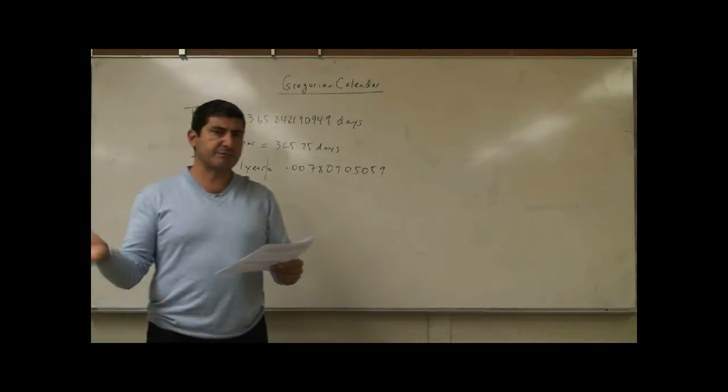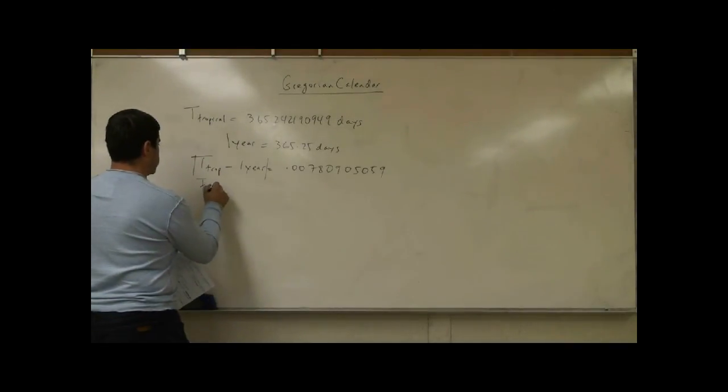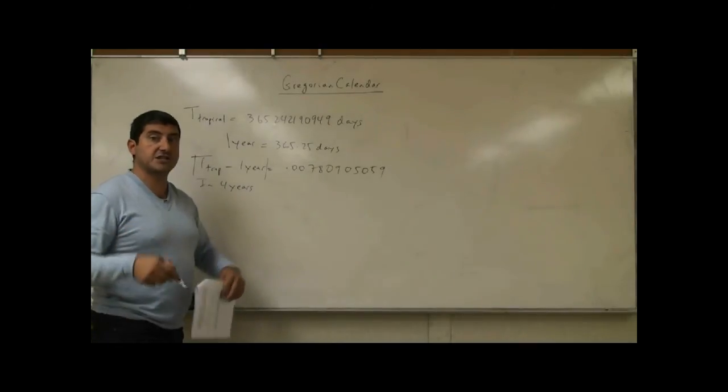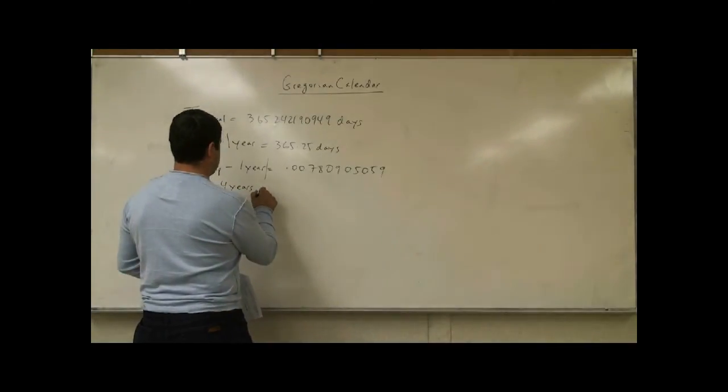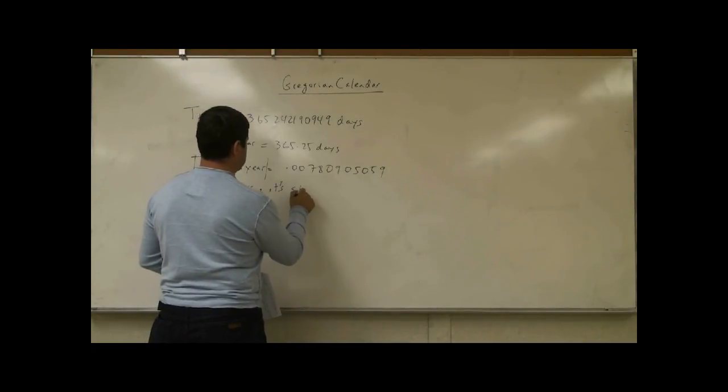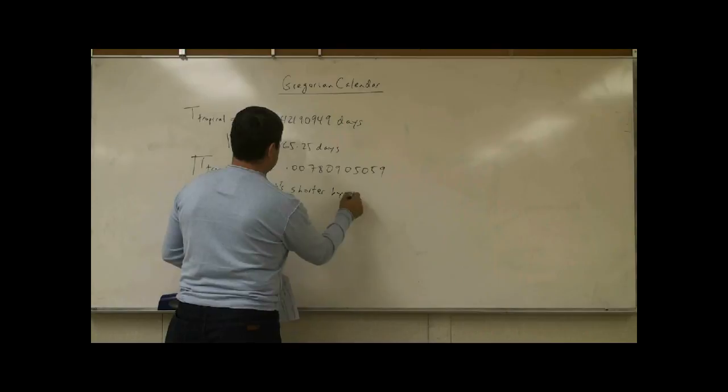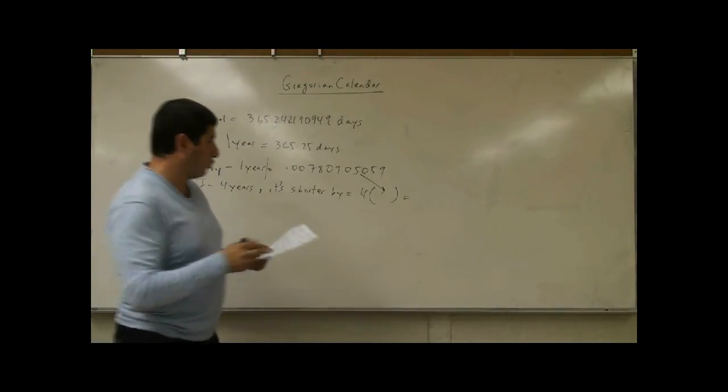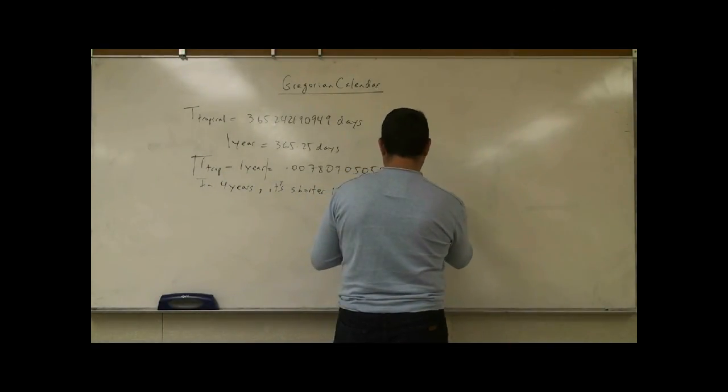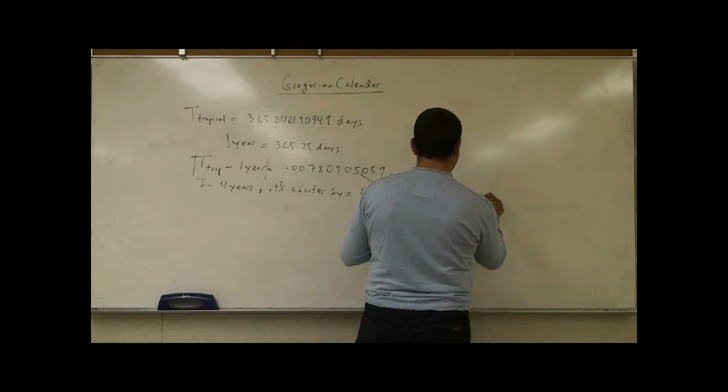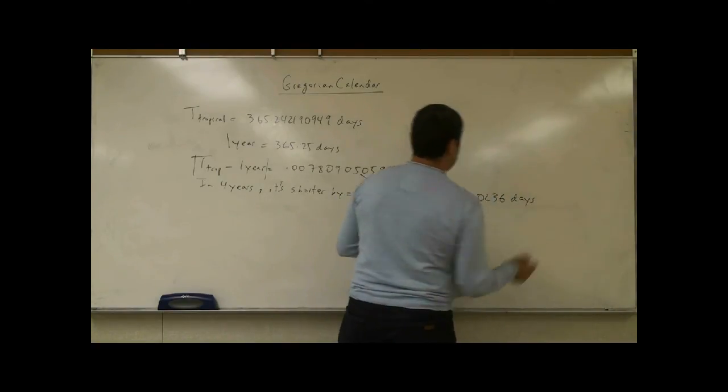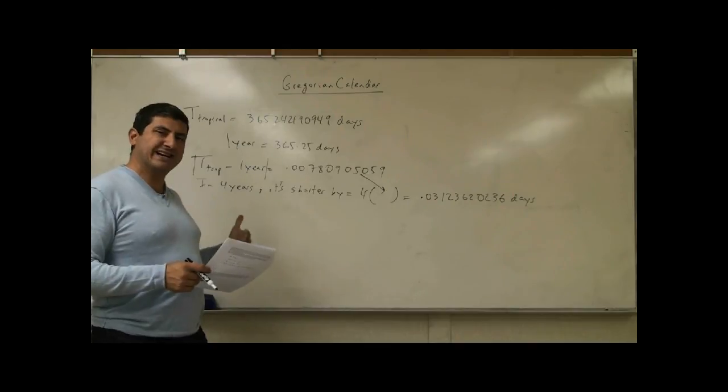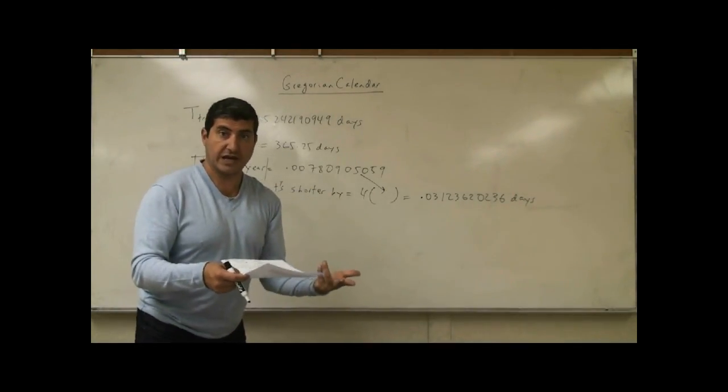Now let's multiply this by four years. In four years, the tropical year will be shorter than the 365 and a quarter days by how much? Four times this number, and you're going to get 0.0312360236 days. So every four years, the tropical year is falling behind our calendar years that we have devised.